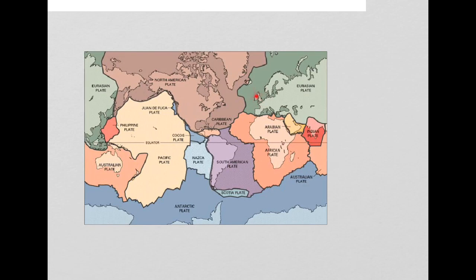Here you can see the UK is part of the Eurasian plate. This black line represents the plate boundary between the Eurasian plate and the North American plate. Other main plates include the African plate, the South American plate, and the Pacific plate.